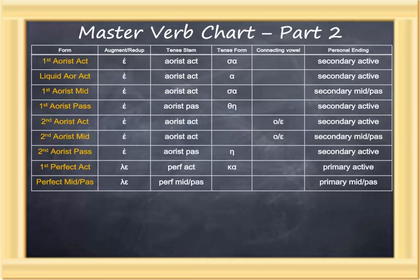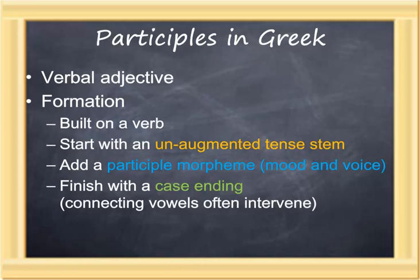The participial mood points to verbal forms that function as verbal adjectives. That is, the form is built on a verb. It starts with an unaugmented tense stem, adds a participle morpheme which indicates that it is a participle and the voice, and it finishes with a case ending.